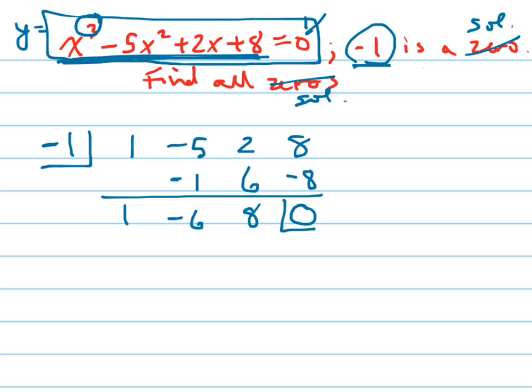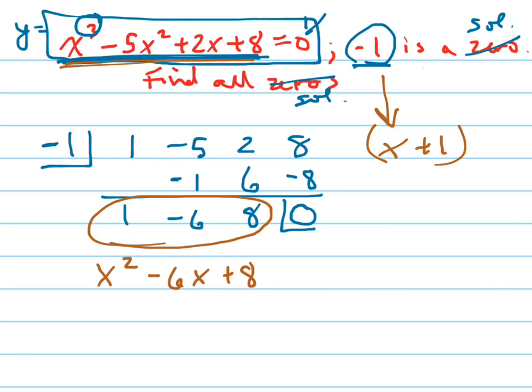Now doing that gives me the other factor. So I know x plus one was one of my factors of this equation, and the other part of it was x squared minus six x plus eight. See how this is a first degree and this is a second degree? One plus two equals three.